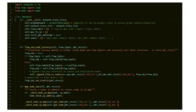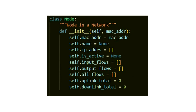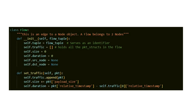The network class has a flow table to represent the network, which has references to all flow objects created — which will have the flow traffic — and also references to all node objects. This is the node class, showing some attributes, and similarly the flow class, where the traffic attribute holds all the packet structures in the flow.